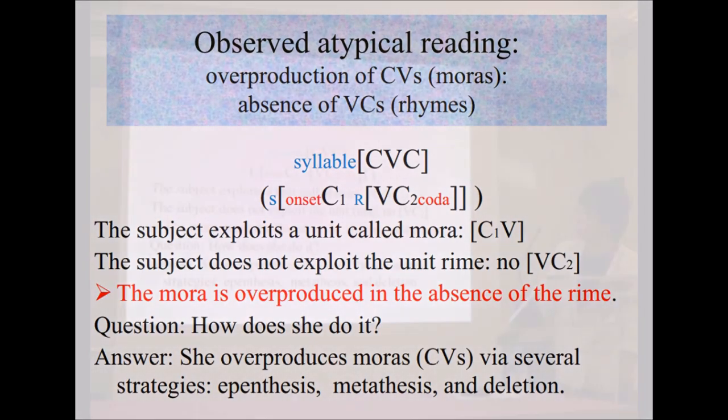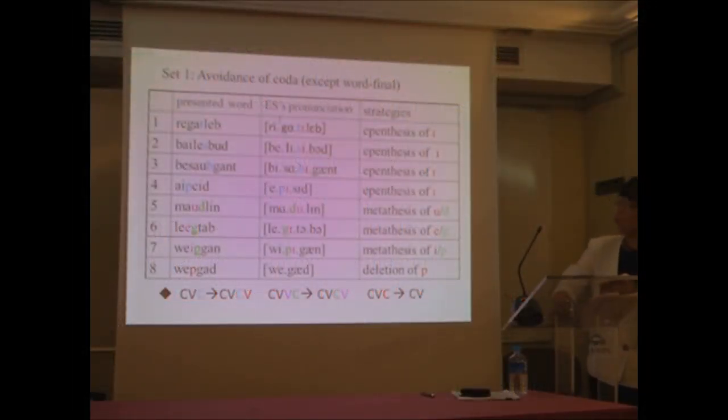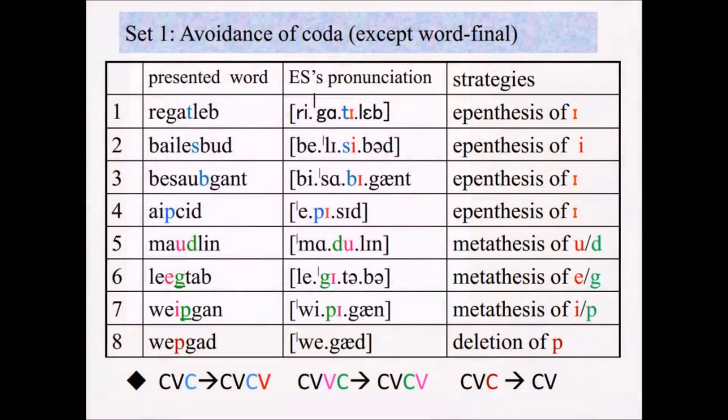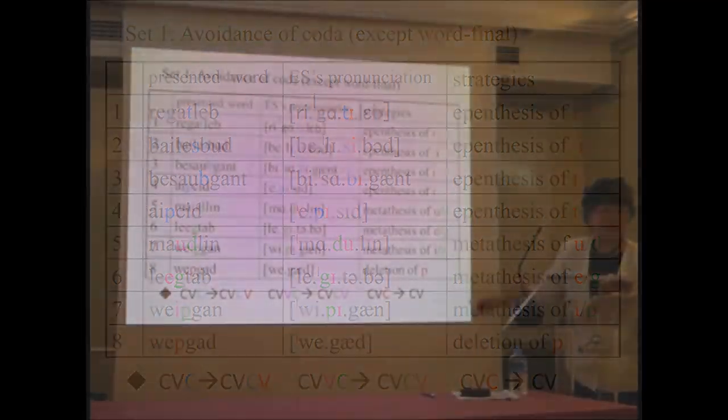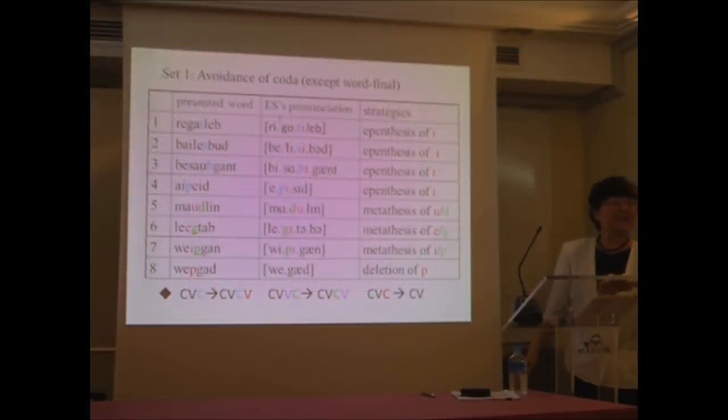Now the question is how does she do it? We observed that she does it via several strategies: epenthesis, metathesis, and deletion. So this is the data. Worse looked pretty difficult, but with her IQ, it shouldn't be. So I just said that she used several strategies. Now let's go through a very simple one: 'webguide.' So the morphological boundary is between P and G. And the 'web, P,' this is called a coda consonant. She can't handle it. So she simply deleted it. So deletion of P, she ended up saying 'we-guy.' One final consonant, she was okay. But other than that, she has no coda.